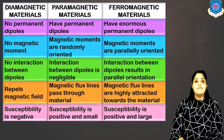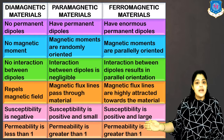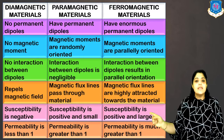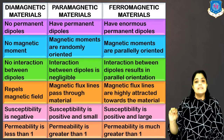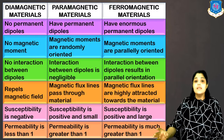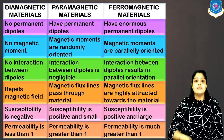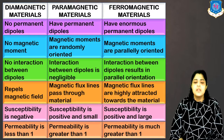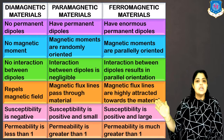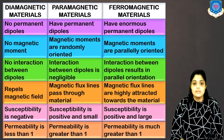Lastly, permeability: in diamagnets it is less than 1, in paramagnets it is slightly greater than 1, and in ferromagnets it is much, much greater than 1. This is a broad classification between the three important categories of magnetic materials.